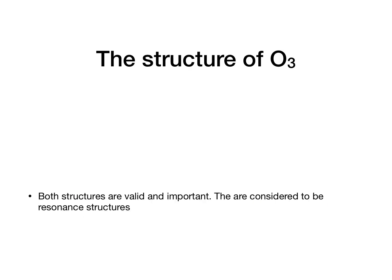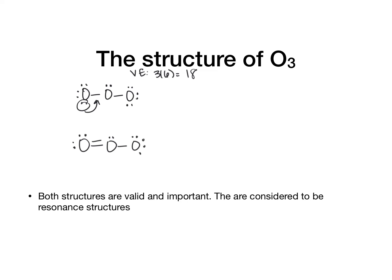Let's look at the structure of O3. The valence electrons are three times six, which gives us 18. We connect three oxygens in a chain and give octet to everybody on the outside, using up 16 electrons, then place the last two on the central oxygen. We need to make octet on the central oxygen, so we take one lone pair from a terminal oxygen and form a double bond. For clarity, I'm going to color-code the oxygens red, blue, and green.